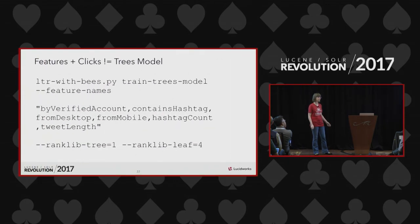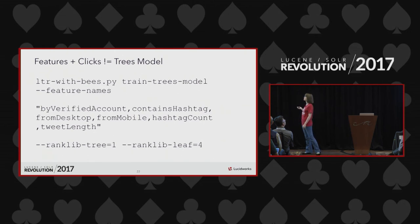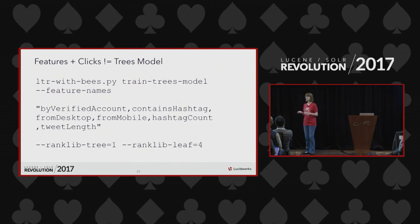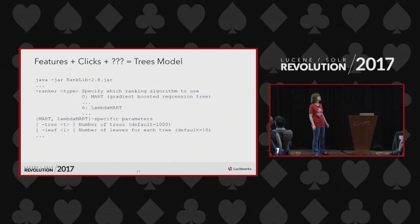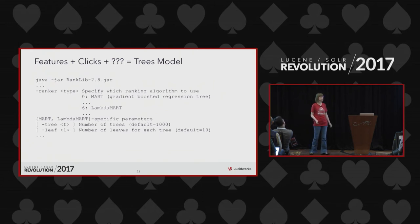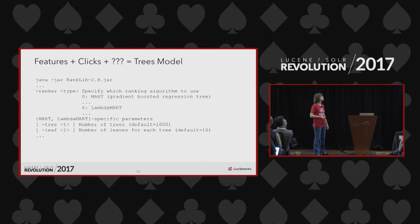If the linear model doesn't quite work for your use case, you might want to try the trees model. The wrapper script uses the RankLib machine learning library, which supports many different algorithms and parameters. Realistically, to get good results with the trees model you'll need some machine learning expertise and data science people on your project — because as we know, rubbish in means rubbish out. The question marks in the title reflect that this is genuinely non-trivial.